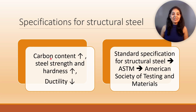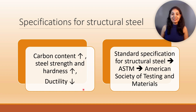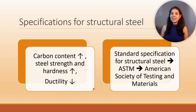As we increase the carbon content in the steel, the steel's strength and hardness also increase, but there is a loss in ductility. The steel used for bridges and buildings consists of one-fourth of one percent carbon with a small amount of some other elements.